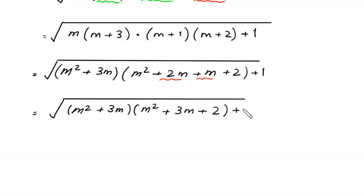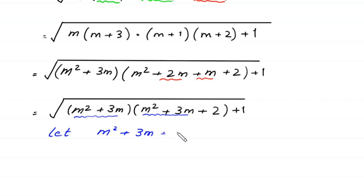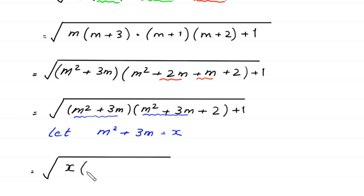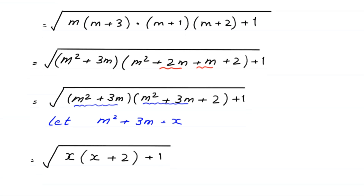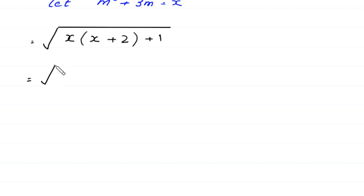Now here we have m squared plus 3m in the first pair and m squared plus 3m again in the second pair (as m squared plus 3m plus 2). So we let x equal m squared plus 3m, and substitute to get the square root of x times (x plus 2) plus 1.